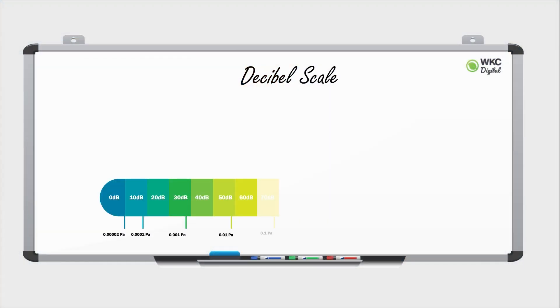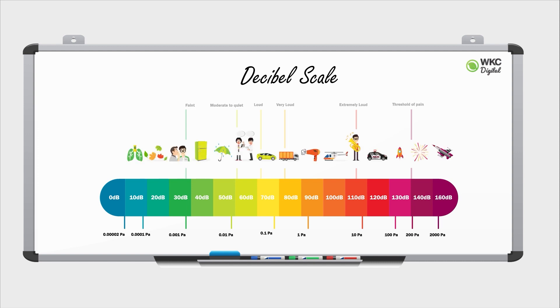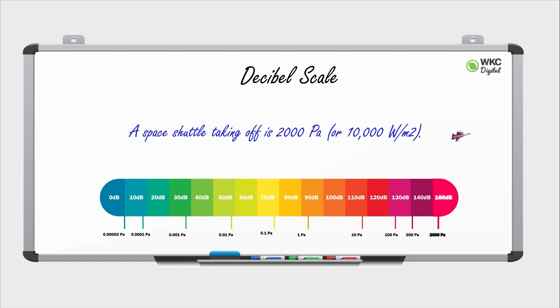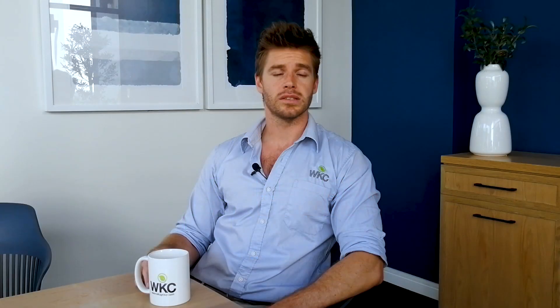Think about the enormous audible range humans can detect. The audible range for humans in pressure starts at 20 × 10⁻⁶ pascal, compared to the sound level of a space shuttle taking off, which is 2000 pascal. On the decibel scale, these two extremes are equivalent to zero decibels and 160 decibels, making that large range of numbers more manageable.